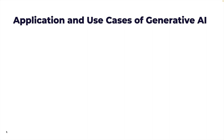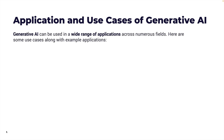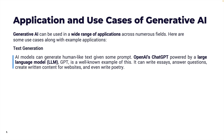Let's take a look at the applications and use cases of Generative AI. Gen AI can be used in a wide range of applications across numerous fields. One area is text generation — AI models can generate human-like text given some prompt. OpenAI's GPT, powered by a large language model, is a well-known example: it can write essays, answer questions, create written content for websites, and even write poetry. In some videos in this series, we'll look at foundation models that are almost as capable as GPT-4 to perform these tasks.